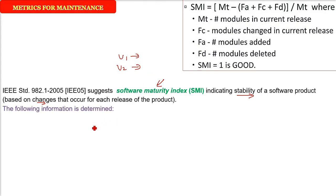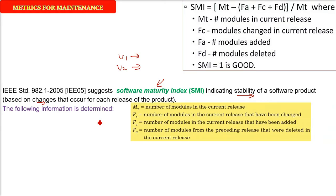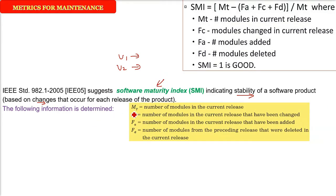This software maturity index is computed very easily. You have a parameter Mt - number of modules in the current release. It can be any version, any release.